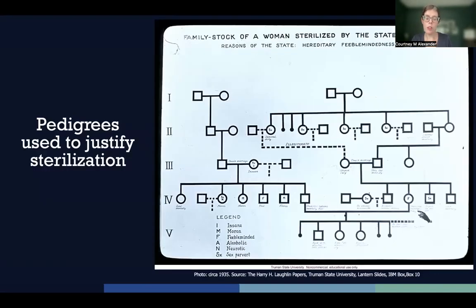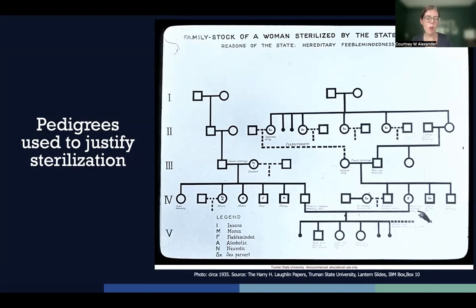Pedigrees were an important tool that eugenicists used to trace the pattern of inheritance in a family. This slide shows a pedigree from a woman who was sterilized by the state of Maine. Eugenicists scored her family members and traced the lineage of defective as well as superior individuals. Pedigrees traced traits such as moral behavior, criminality, disease, intelligence, and feeble-mindedness. While there is essentially no scientific basis for the inheritance of any of these characteristics, the creation of these pedigrees nevertheless helped establish them as a legitimate science.